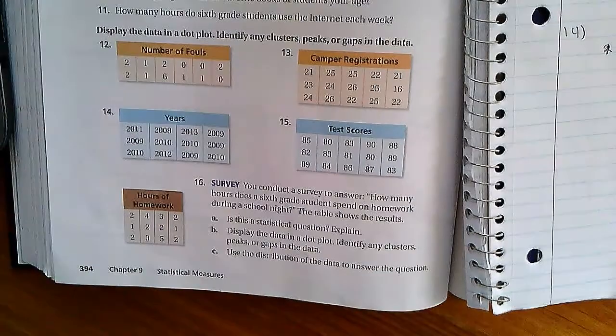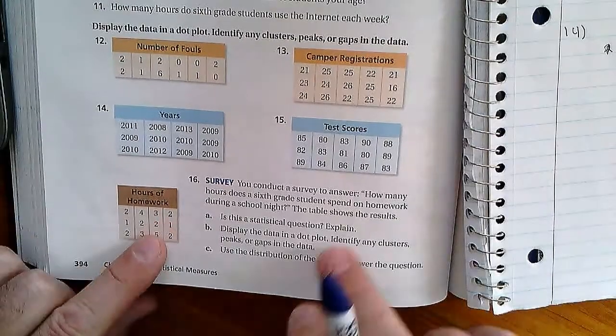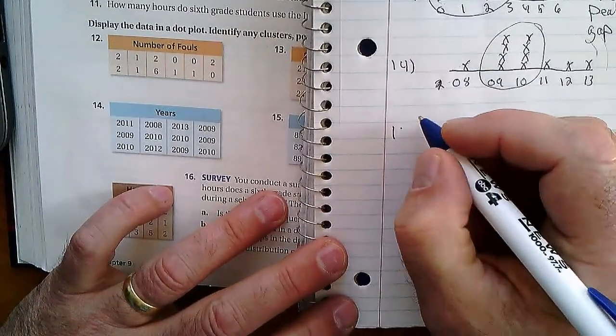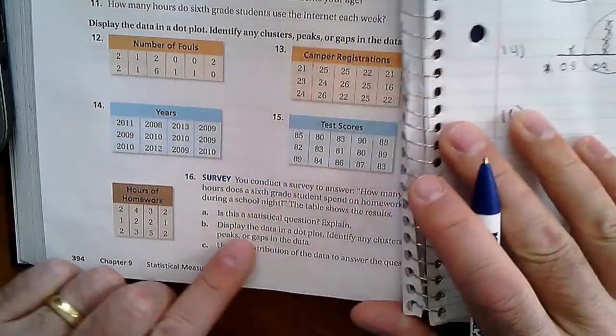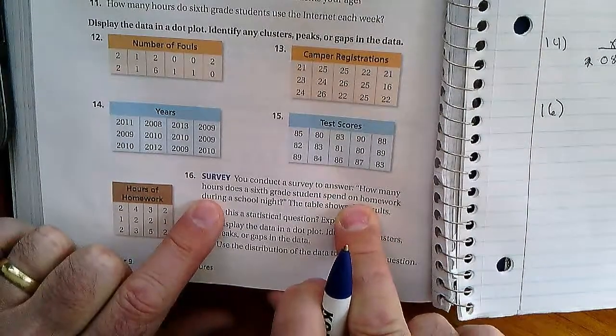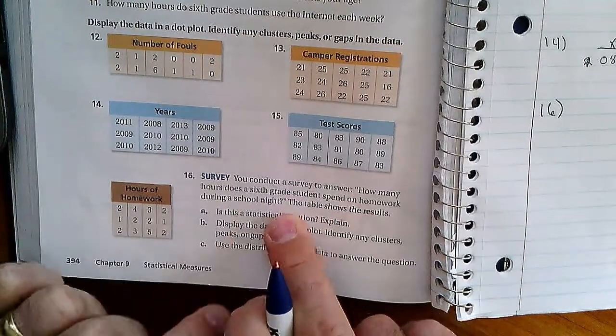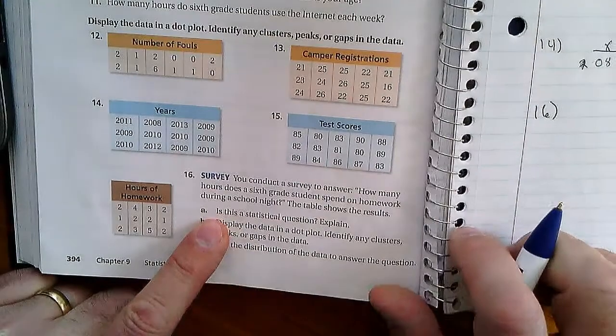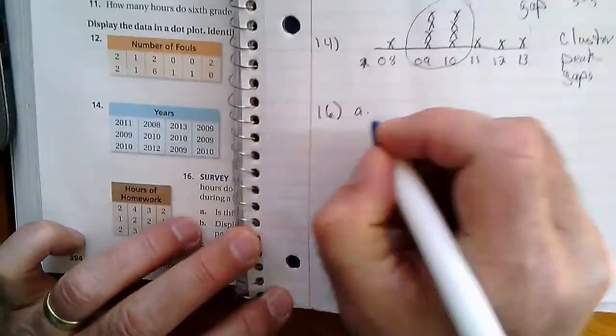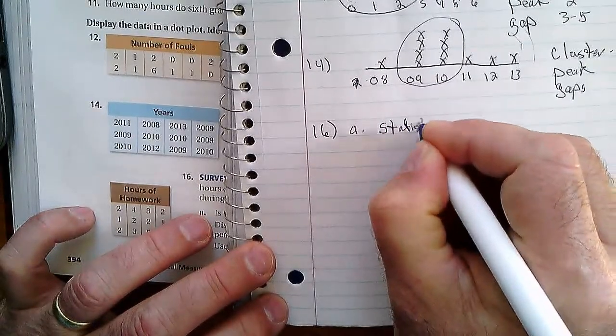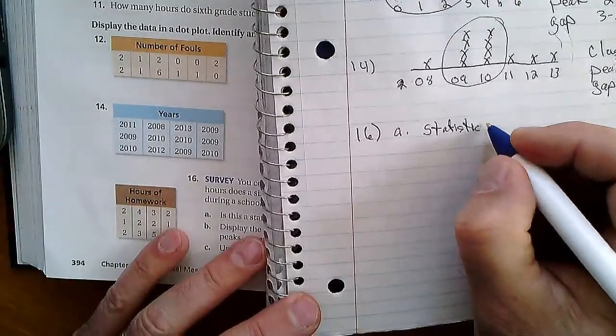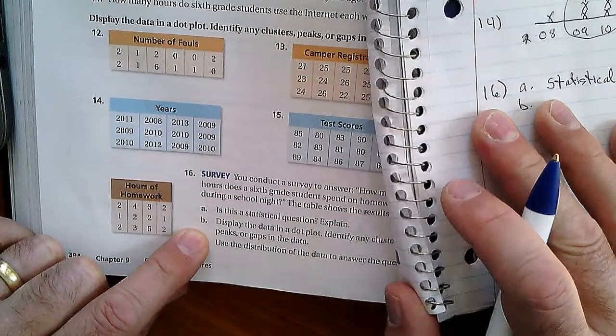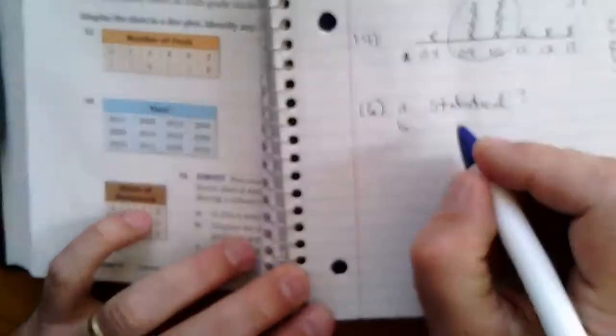Let's go on to number 16. This question made me laugh because it's about how much homework kids are doing. We've been on this for 8 minutes and 50 seconds. You conduct a survey to answer: how many hours does a sixth grade student spend on homework during the school night? The table shows the results. Part A: is this a statistical question? Well, there's lots of different answers, so yes, a statistical question. Part B: display the data on a dot plot, identify any clusters, peaks, or gaps.